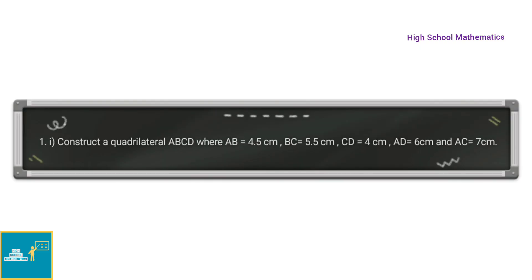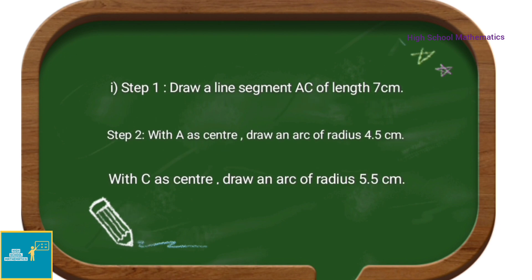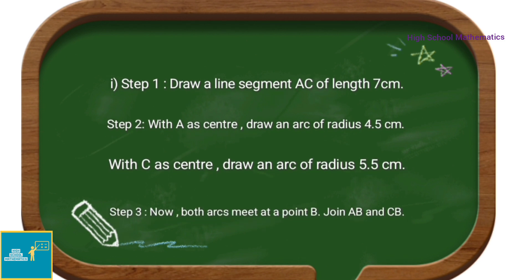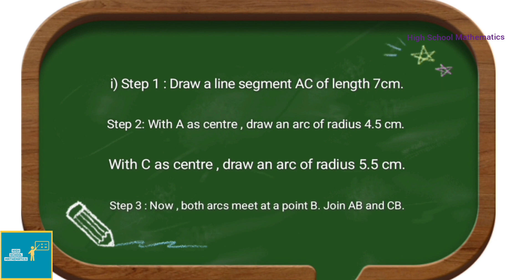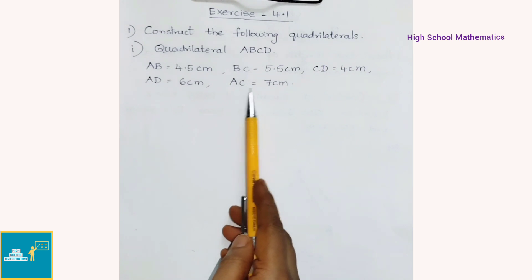See now the first sum: construct a quadrilateral ABCD where AB equals 4.5 cm, BC equals 5.5 cm, CD equals 4 cm, AD equals 6 cm, and AC equals 7 cm. Steps of construction — Step 1: draw a line segment AC of length 7 cm. Step 2: with A as center draw an arc of radius 4.5 cm; with C as center draw an arc of radius 5.5 cm. Step 3: both arcs meet at point B, then join AB and CB.